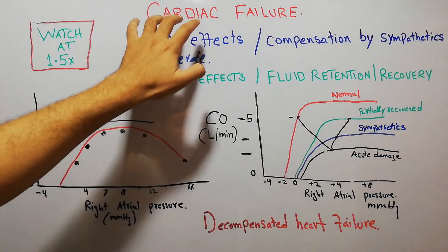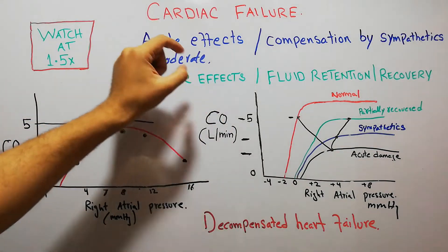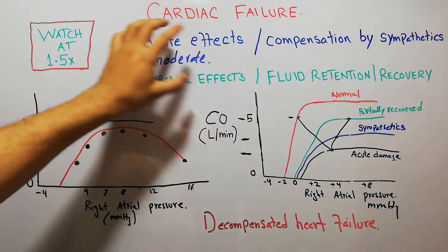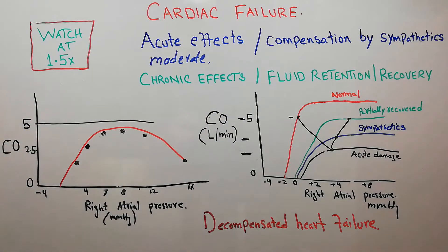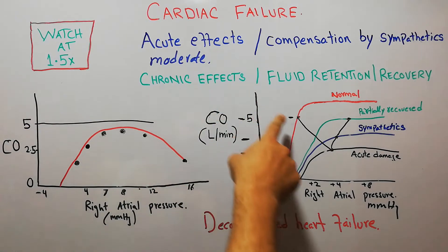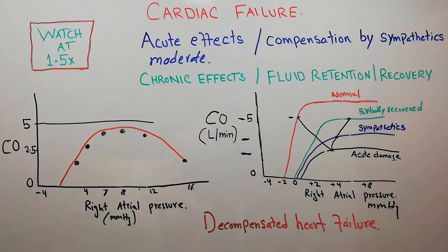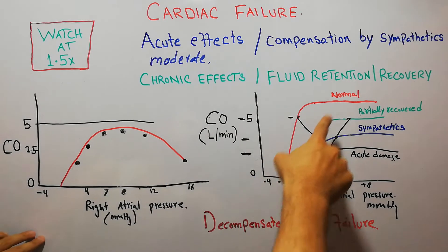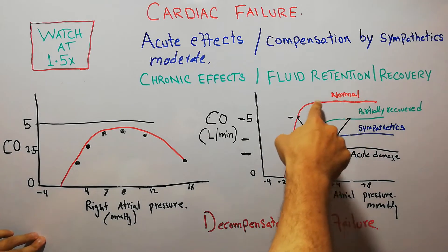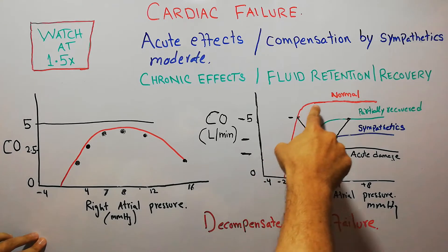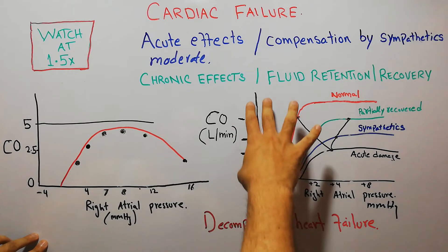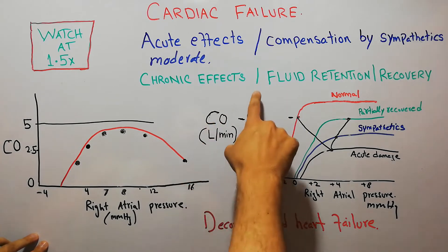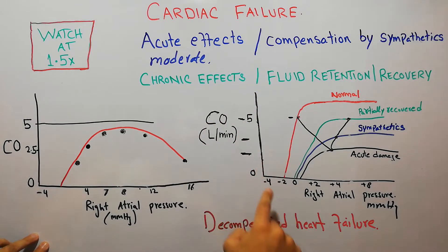Whenever cardiac failure occurs there are some acute effects and then some chronic effects. The acute effect is basically a sudden decrease in cardiac output. On this diagram we have the cardiac output on the y-axis and the right atrial pressure on the x-axis.